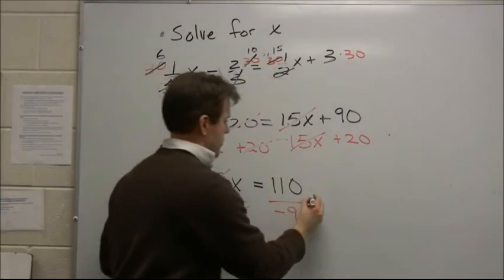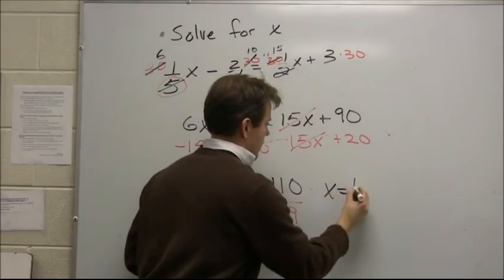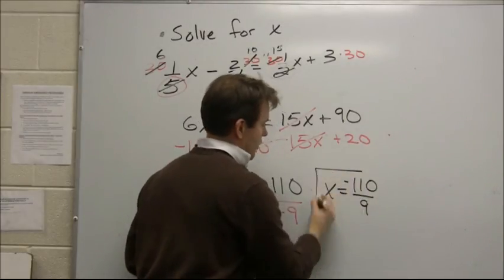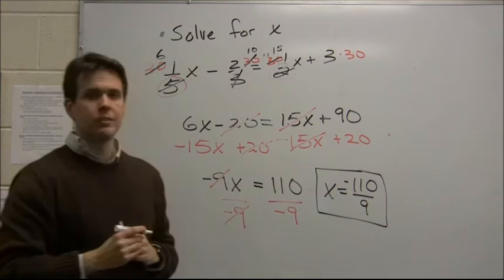So x equals 110 over negative nine. I'm going to bring that negative up. It just looks a little better on top. So negative 110 over nine.